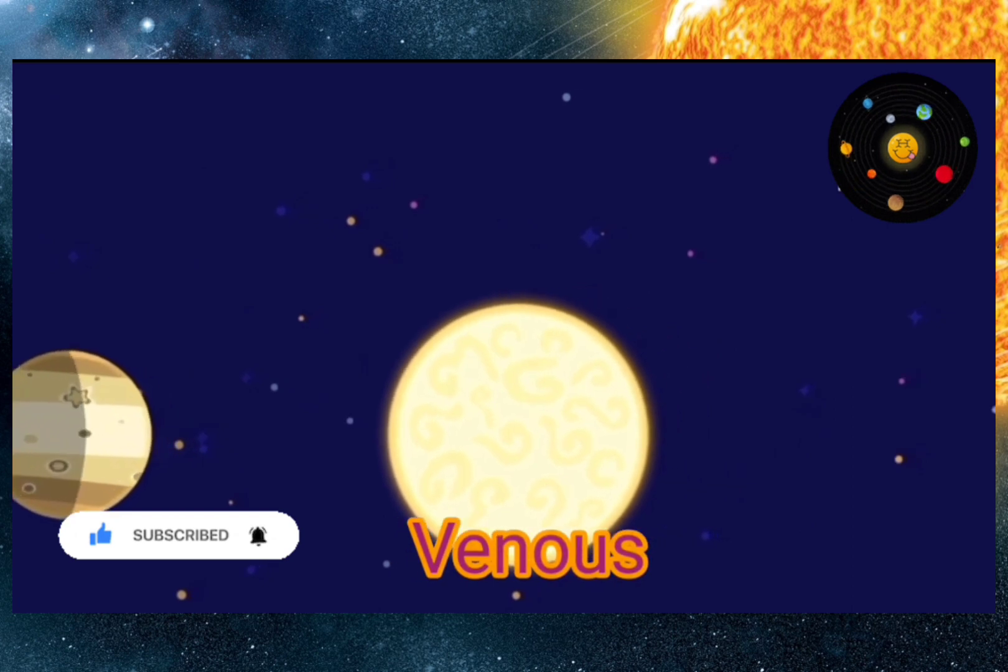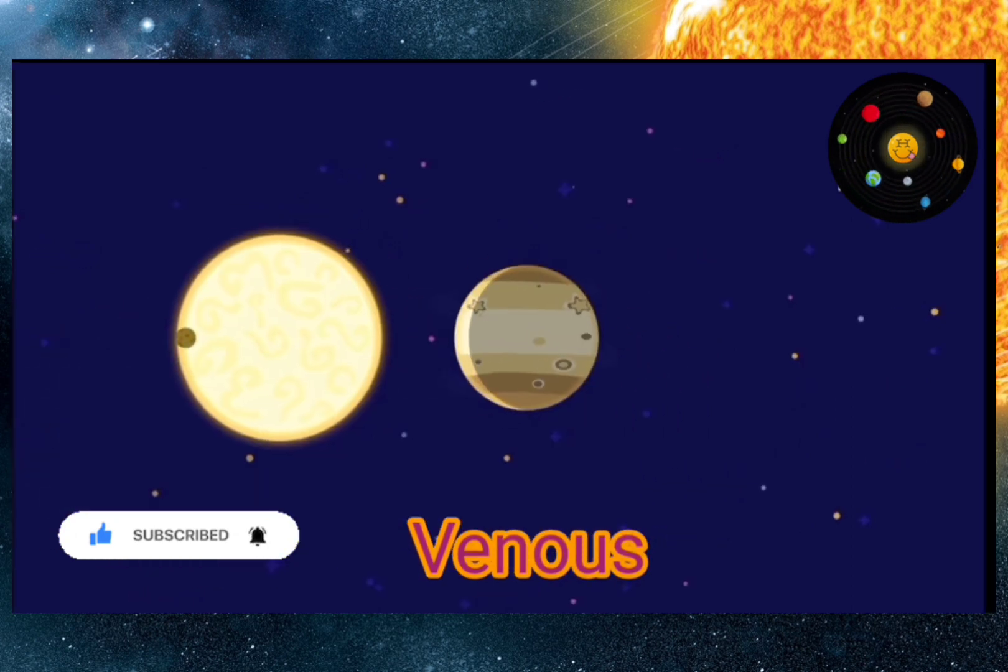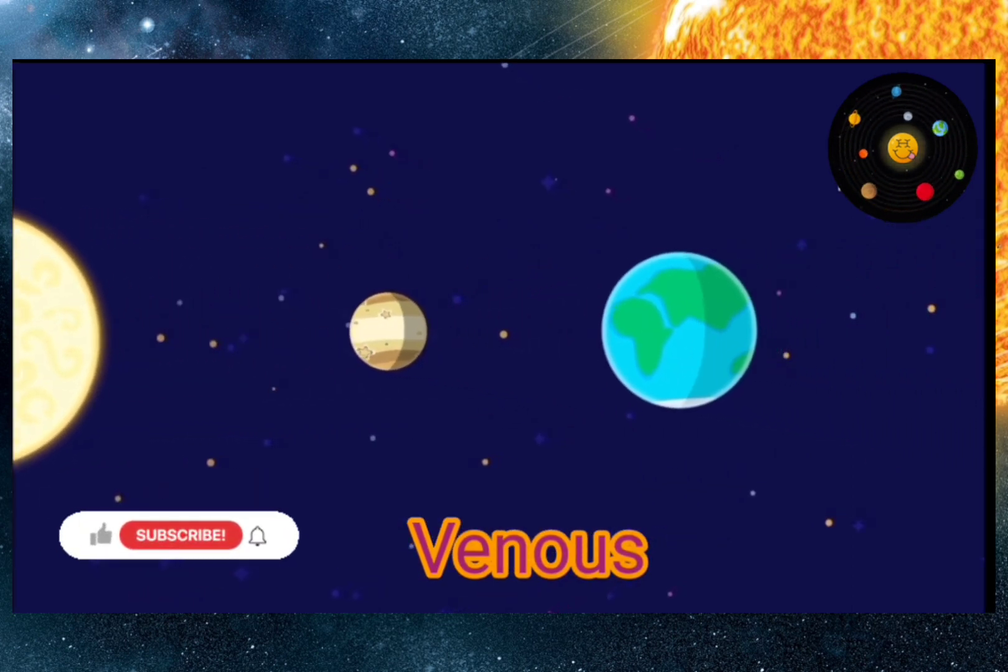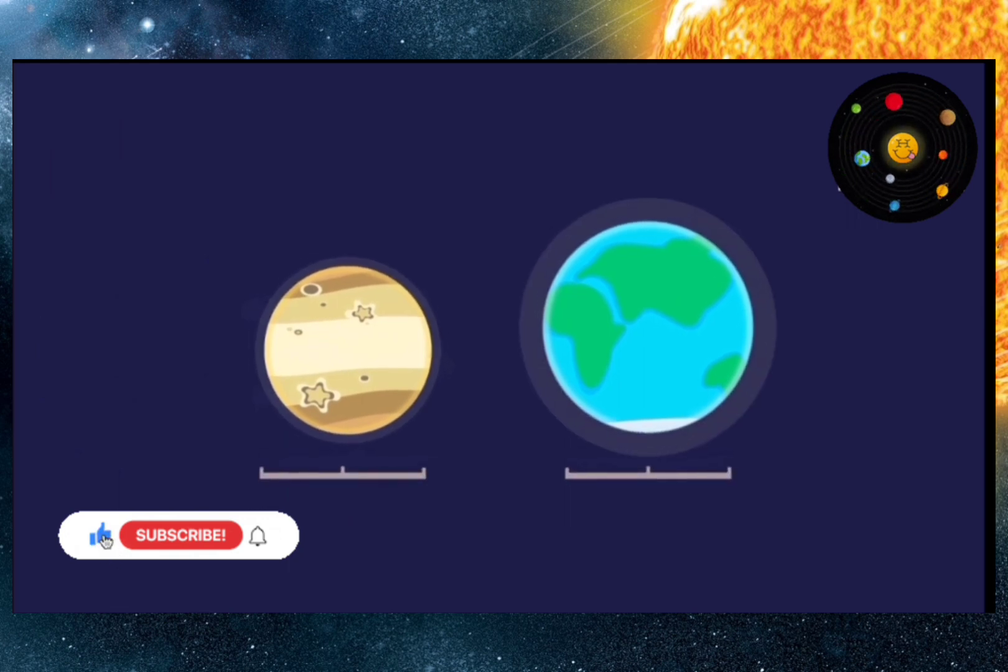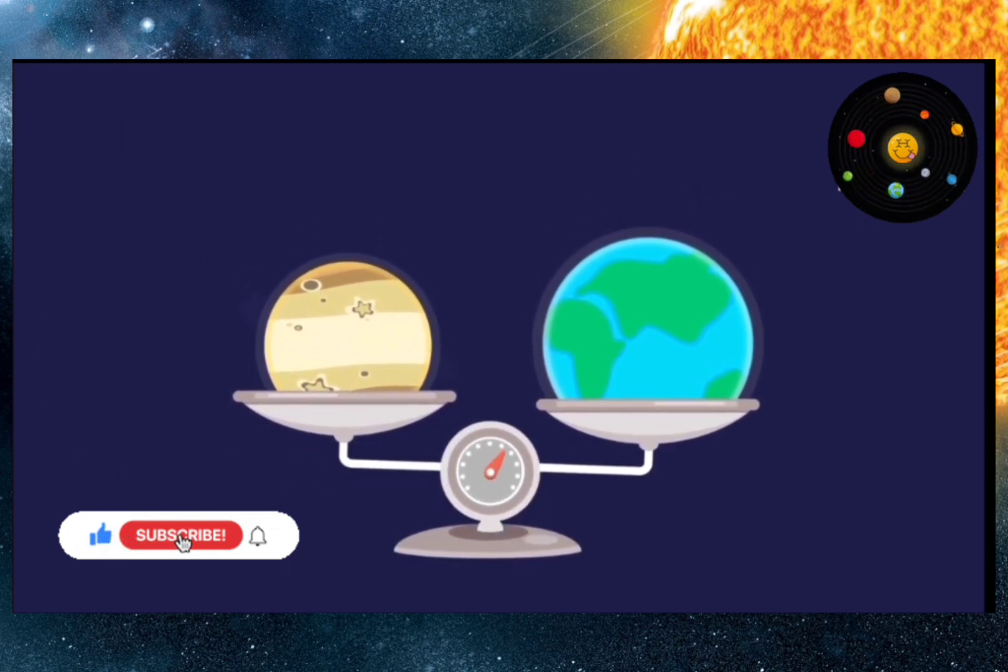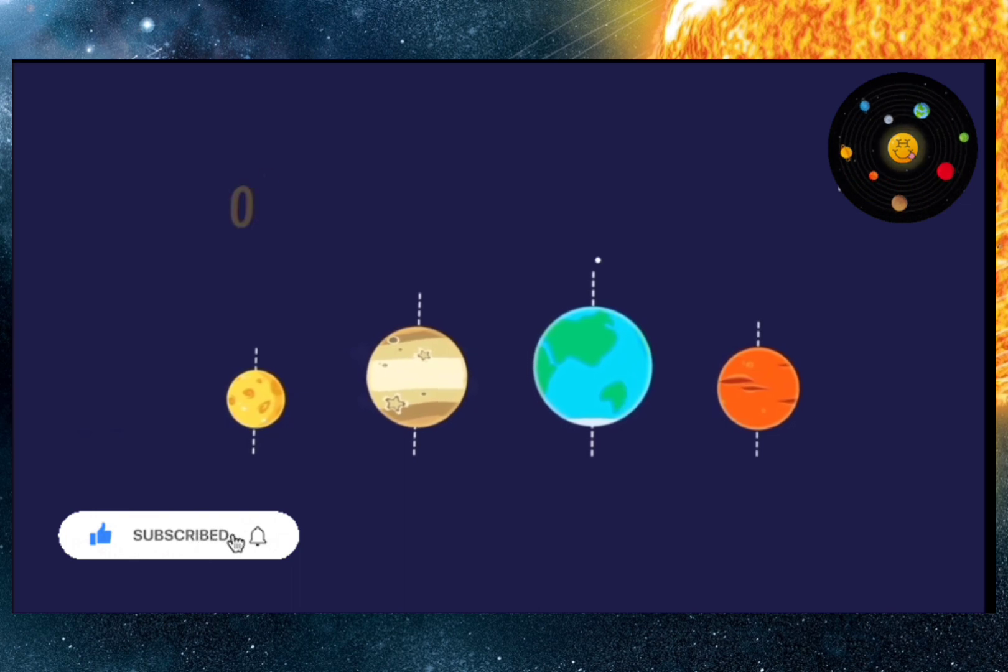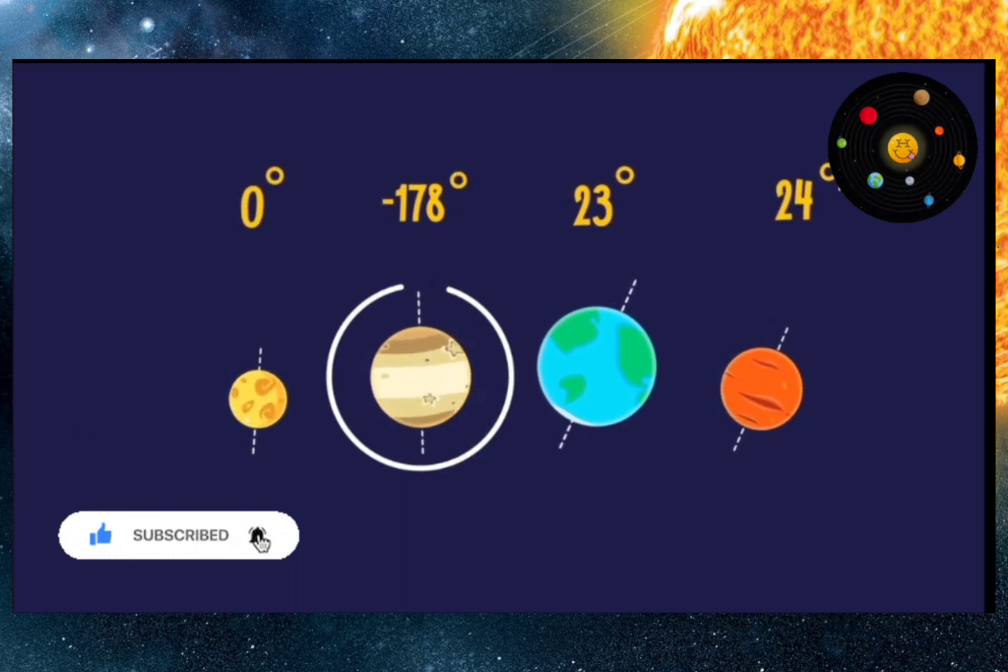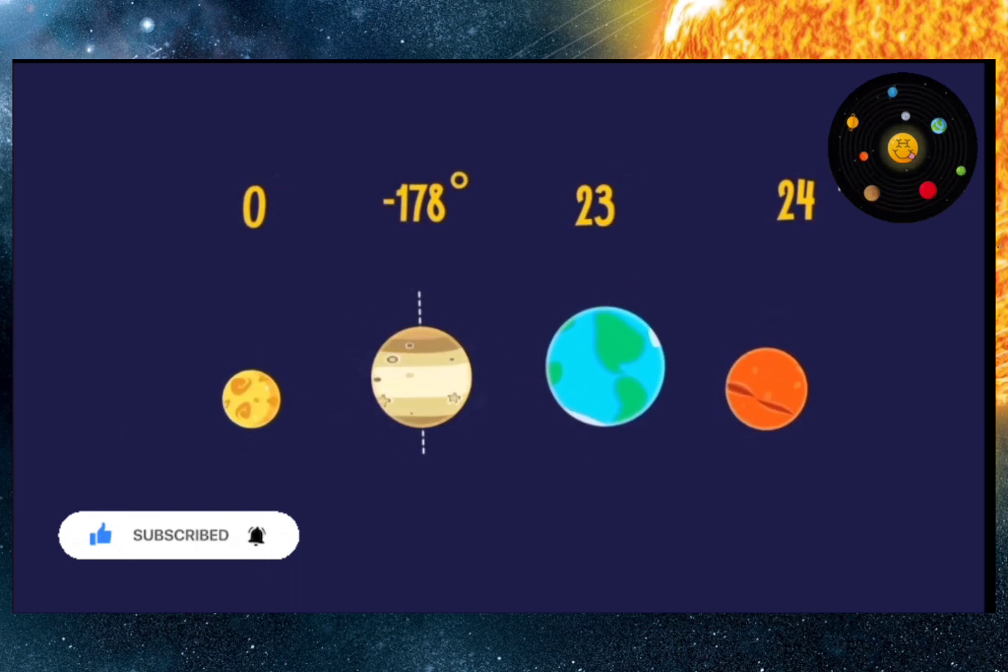It's Venus, the second planet from the sun. It is very similar to the Earth. It too has an atmosphere, and it is roughly the same size and weight. But unlike other planets, Venus rotates in the opposite direction and very slowly.